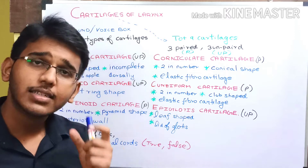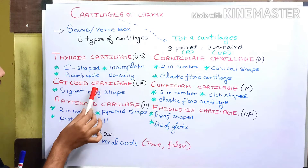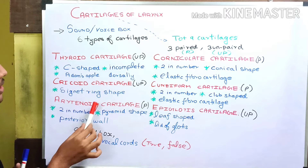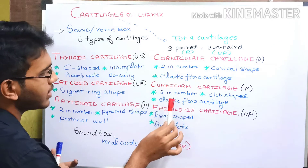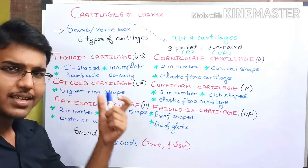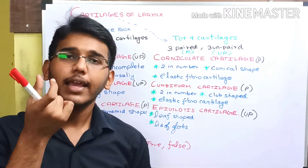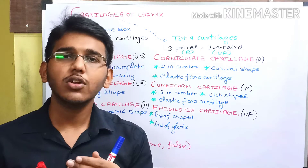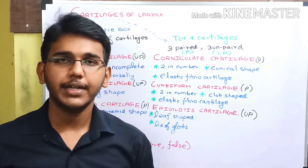The 6 types of cartilages are: the thyroid cartilage, the cricoid cartilage, the arytenoid cartilage, the corniculate cartilage, the cuneiform cartilage, and the epiglottis. The larynx is also called the sound box because it helps in the production of sound — that is, our speaking ability.